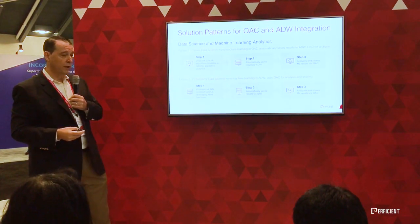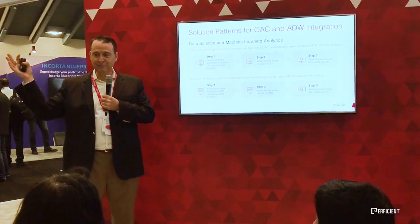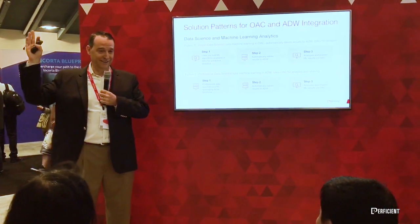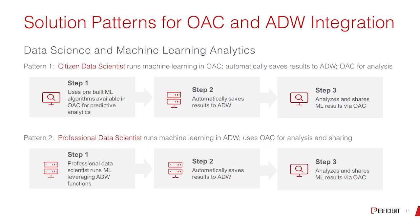The last two patterns involve machine learning. Who's heard of machine learning? Pattern one is the citizen data scientist. In Oracle Analytics Cloud there are about 10 to 15 machine learning algorithms you can use without being a data scientist — just upload your data set, run it, and you can predict things like who's going to leave the company, what sales will be, or when products will run out. You can load the results into ADW and share via OAC, without exposing the underlying algorithm details like naive Bayes binary or multi-classifier.